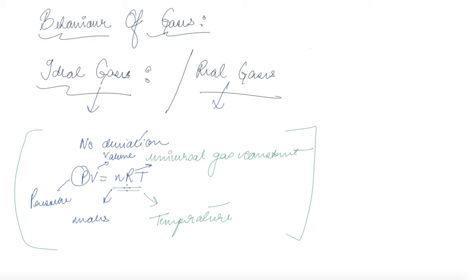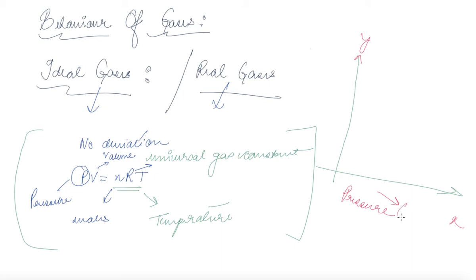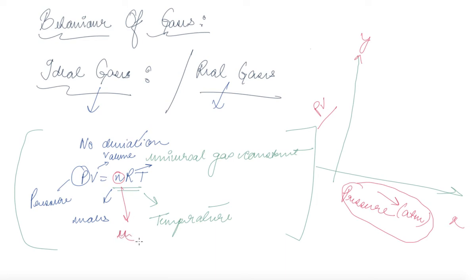If you plot a graph with pressure on the x-axis and PV/n on the y-axis, we can observe what happens during atmospheric pressure. Let's look at how this ratio behaves.